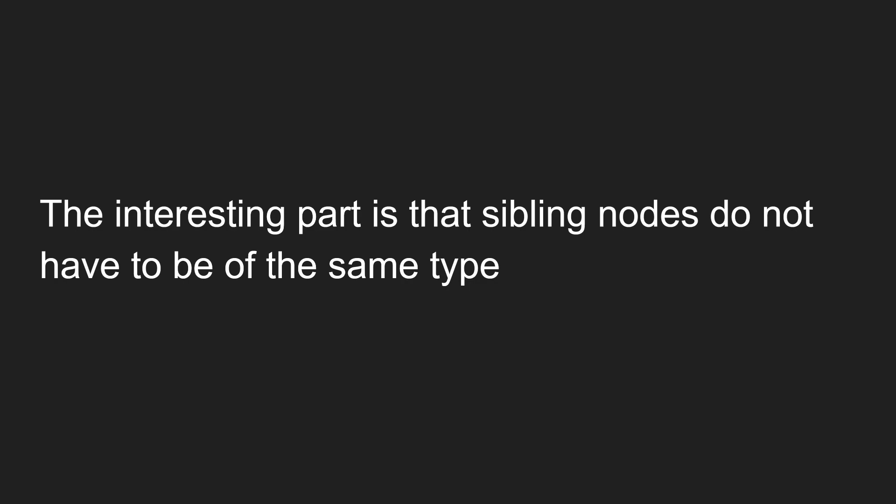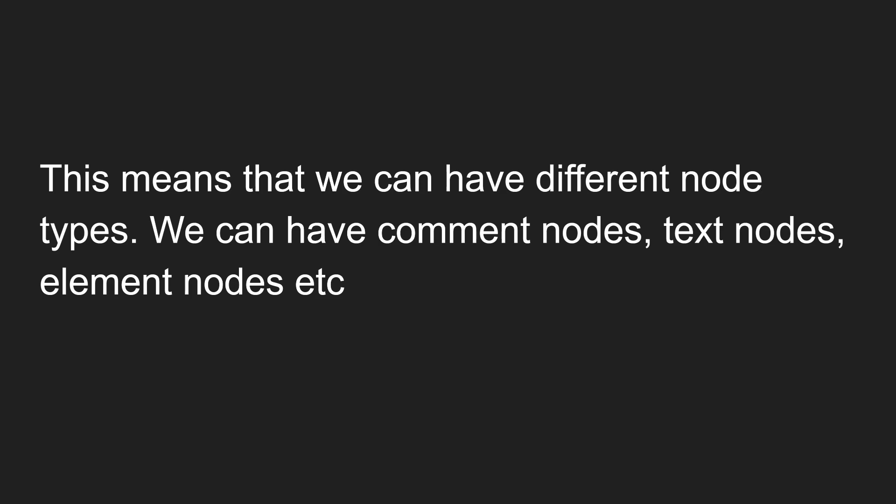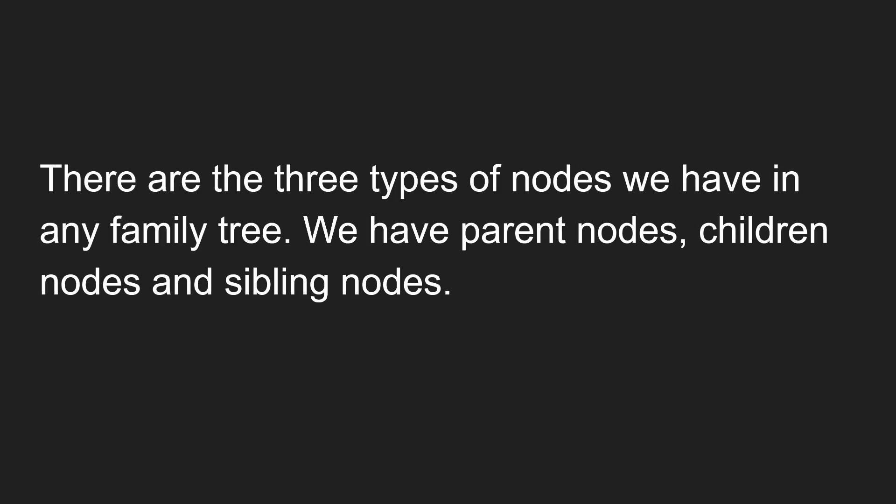The interesting part is that sibling nodes do not have to be of the same type. We already learned about node types — element node, text node, comment node. Sibling nodes can have different node types: comment node, text node, element node, etc. There are three types of nodes in any family tree: parent nodes, children nodes, and sibling nodes.